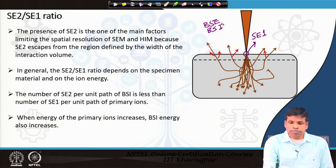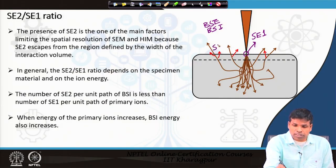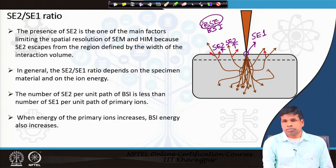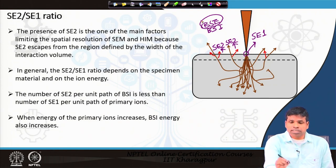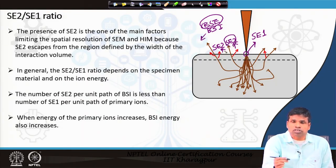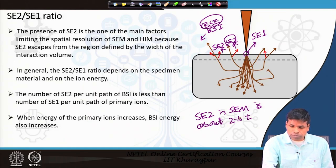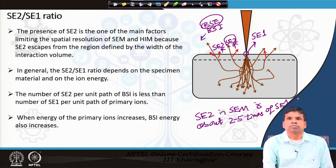When those electrons come out of the specimen, they have interacted with the specimen and their energy becomes less. When energy becomes less, those ions and electrons can produce more SC2. In case of electron microscope, the backscattered electron formation is higher compared to backscattered ion formation with ion microscopy, because fewer backscattered ions are formed in the helium ion microscope. SC2 in the scanning electron microscope is about 2 to 5 times that of SC1.